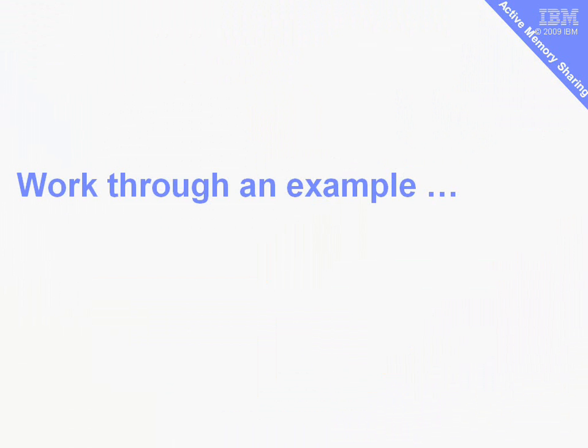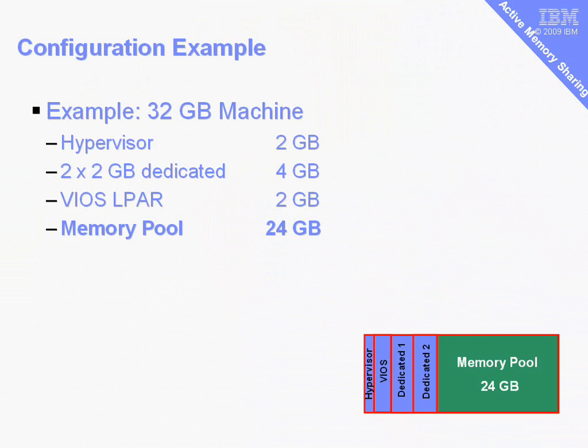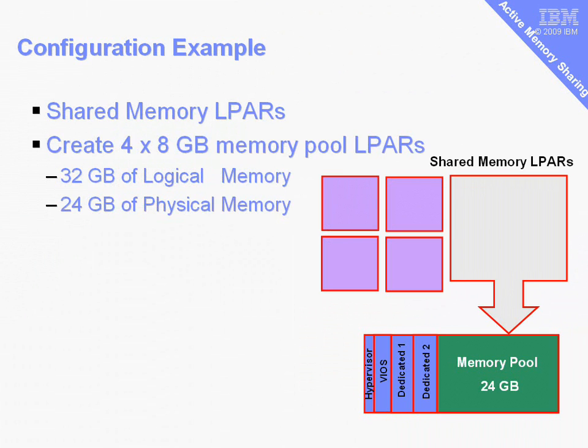Now I want to work through a small worked example to see how we can actually create our logical partitions and use memory between them. In this example we have a 32GB machine. The hypervisor uses some memory, we have some dedicated logical partitions with their own memory, the VIO server takes a little bit, and the rest goes into the pool — giving us 24GB of memory in the pool. We're going to create four 8GB logical partitions to use that pool. You'll immediately see that we have 24GB of real memory, but those logical partitions have what's called logical memory — which is actually larger than the physical memory — so we have to be careful how we fit these logical partitions into the available memory.